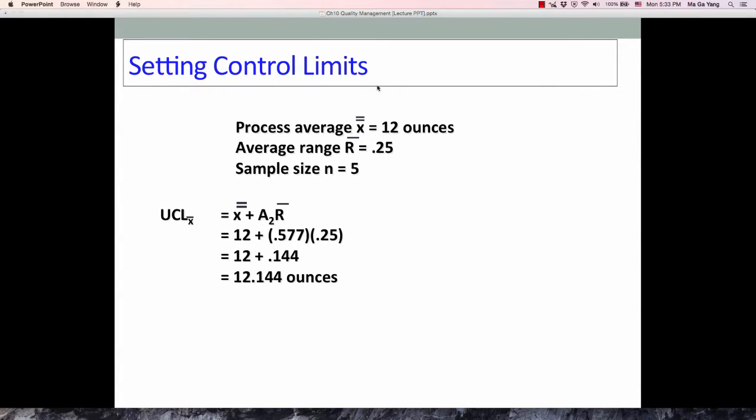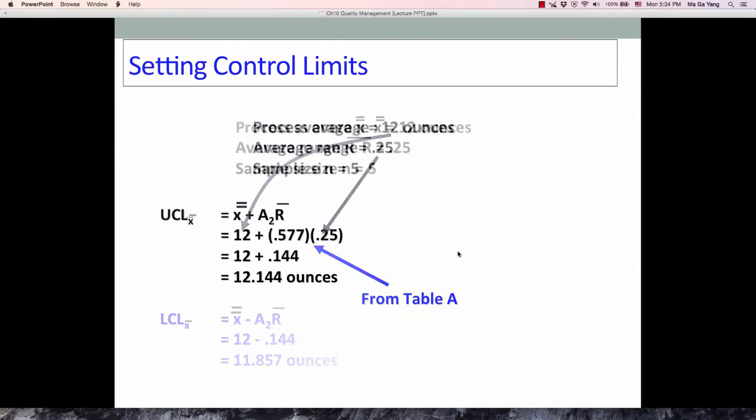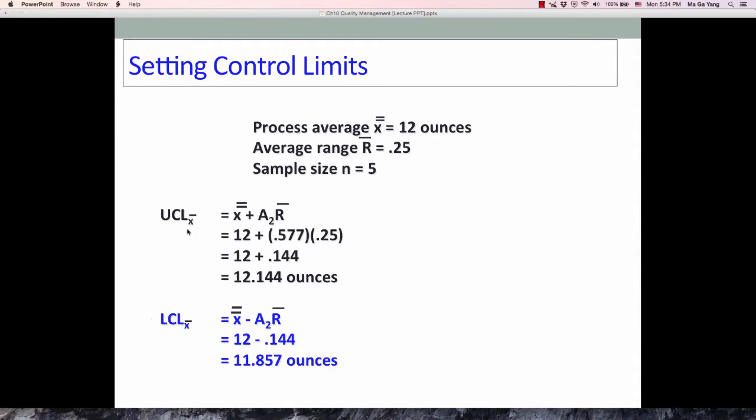For example, if the process average X-bar is 12 ounces, average range R is .25, and sample size n=5, then we can find the upper and lower control limits for X-bar chart. UCL equals X-bar plus A₂R-bar, equals 12 plus .577 times .25, equals 12 plus .144, equals 12.144 ounces. The lower control limit equals 11.857 ounces.